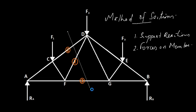Draw a line through the three members. There are then two parts: the left side of the line and the right side of the line. We can consider the left side as a body in equilibrium, and also consider the right side as a body in equilibrium. You will need to assume a direction for the forces in these three members, because at the moment you don't know the direction of the forces.